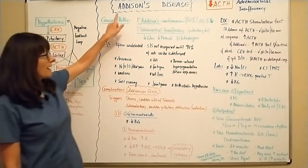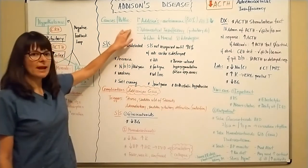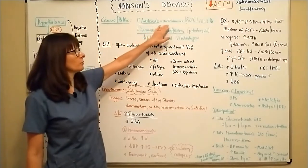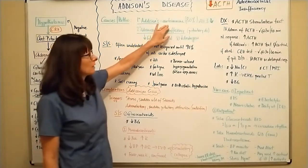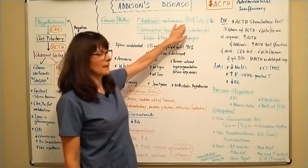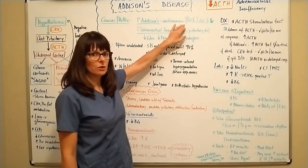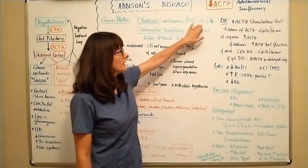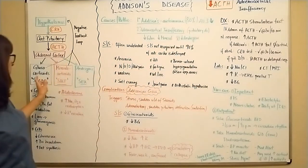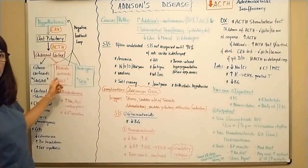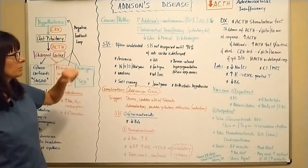So the causes of Addison's disease, primary Addison's disease is usually caused by autoimmune disorders and is 80% of the causes for Addison's disease. And in that case, all three of the glucocorticoids, mineralocorticoids, and androgens will be decreased.